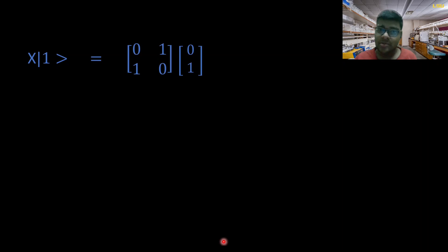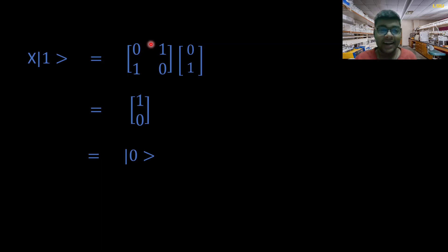Now let's apply the quantum NOT gate on the |1⟩ state. Substituting the matrix and vector and carrying out the multiplication, we end up getting |0⟩. So you can see why it's called a bit-flipping gate: when applied to |0⟩, the state transforms to |1⟩, and when applied to |1⟩, it transforms back to |0⟩. That's the function of the Pauli-X gate, or quantum NOT gate.